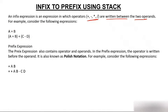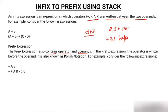Now comes the question: what is prefix? In prefix, the operator comes before the operand. So if two plus three is infix, then the prefix equivalent has the operator written first. The prefix expression also contains operators and operands, but the operator is written before the operand. It is also known as Polish notation, because a Polish mathematician discovered it.